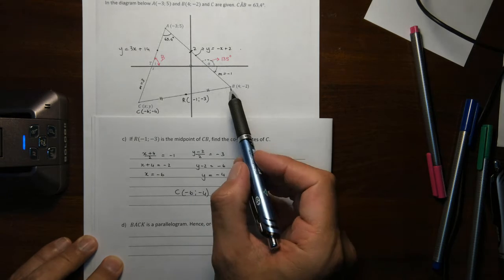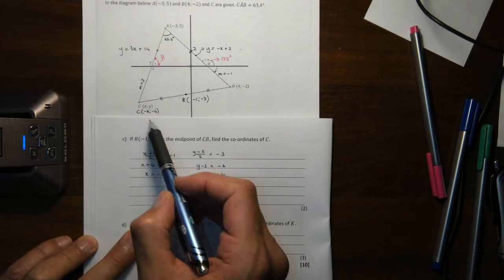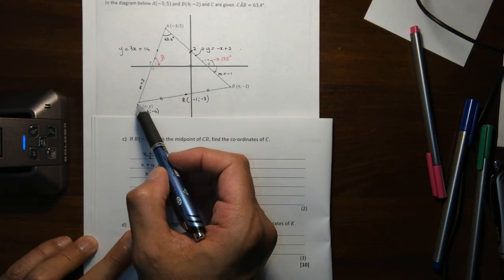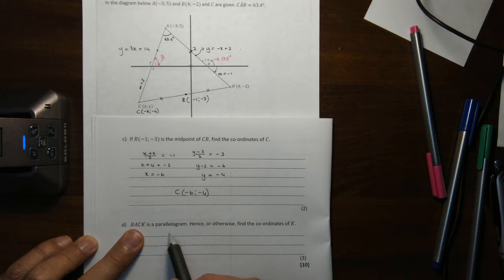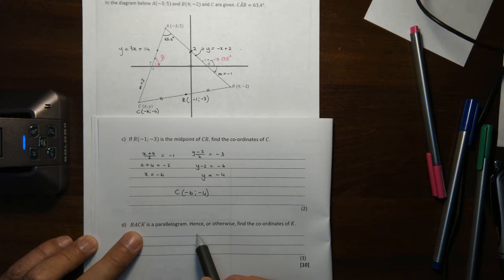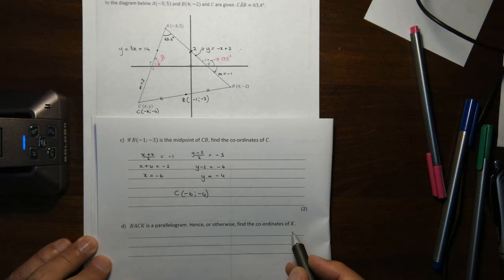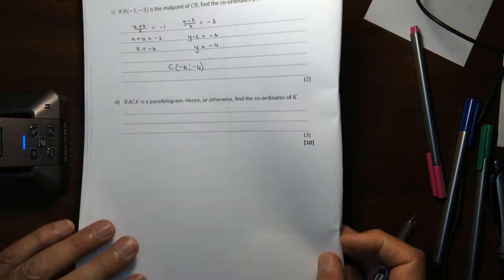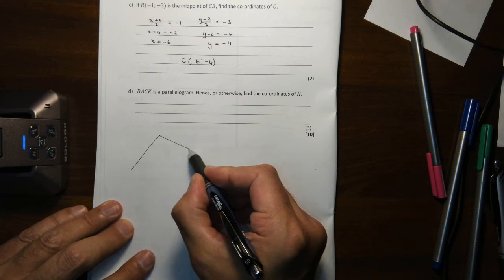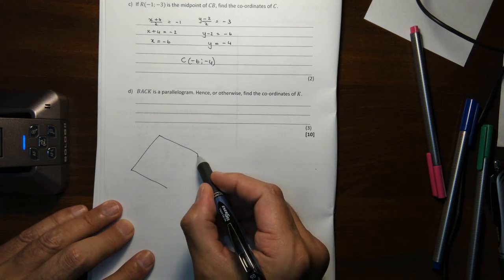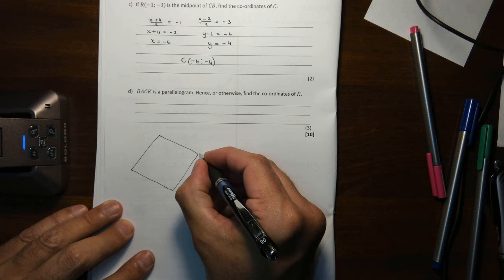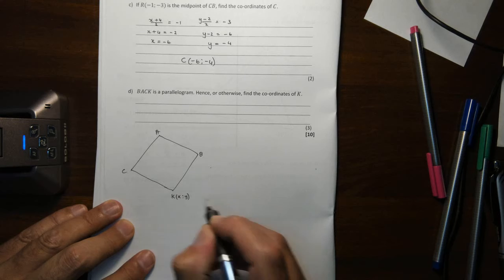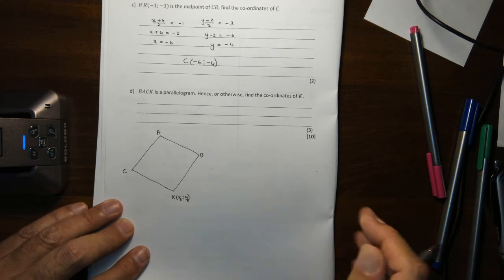Now they say to us, B, A, C, and K. Look at my pen. B, A, C, and another point, K, is a parallelogram. Hence or otherwise, find the coordinates of K. So let me do the diagram here. Because I want to remind you of a principle that we learned. B, A, C, K. I'm going to make the variable point X of K, Y of K. B, we've got. B is 4 and negative 2. A, I've got. A is minus 3 and 5. And then C is minus 6, minus 4. We just found that.